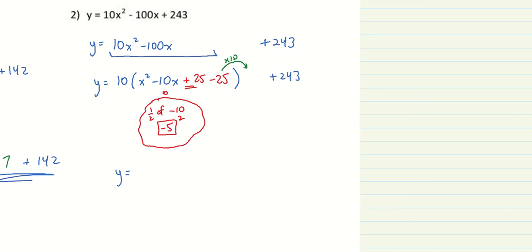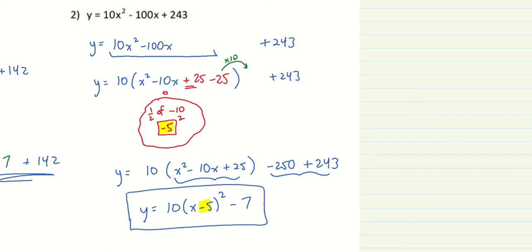All right, in the next step, we're going to bring out the negative 25. And remember that on its way out, it deserves to be multiplied by the 10 because it's in that set of brackets. So, y is equal to 10, x squared minus 10x, plus 25. On the outside, negative 25 times positive 10 is going to be negative 250, plus 243. Perfect square trinomial. That is 10 times x minus 5 squared. And then, last but not least, we're going to add those together. Negative 250 plus 243 is minus 7. So, there is our vertex form of the parabola by completing the square. Okay, we're going to do one more, and I think that's probably good for this video.